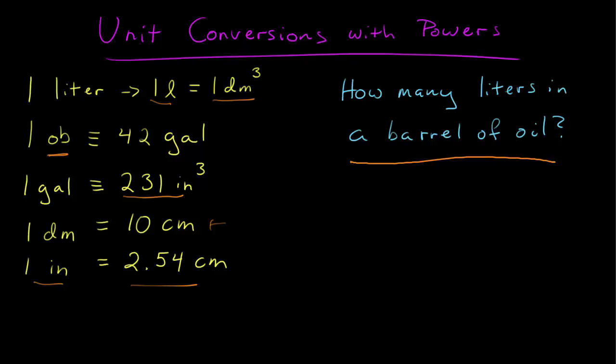Note that we have different powers going on here. We're dealing with volumes. The dimension of volume is cubic length. So things like liters, gallons, and oil barrels are single units of volume, but they're defined in terms of lengths taken to the third power.